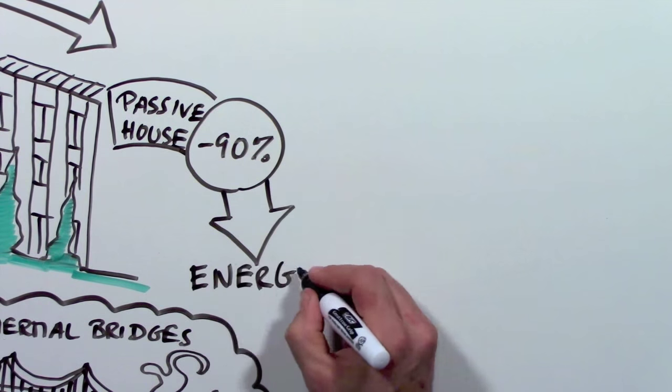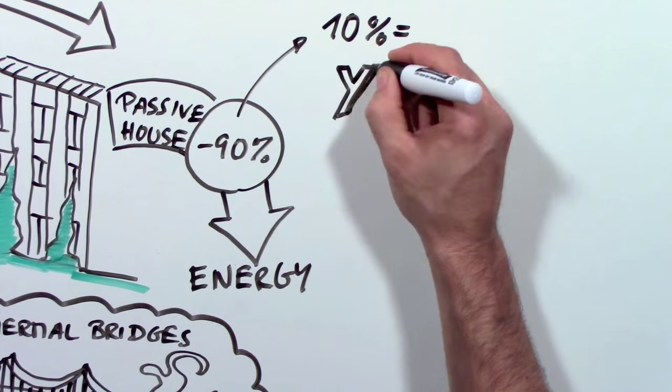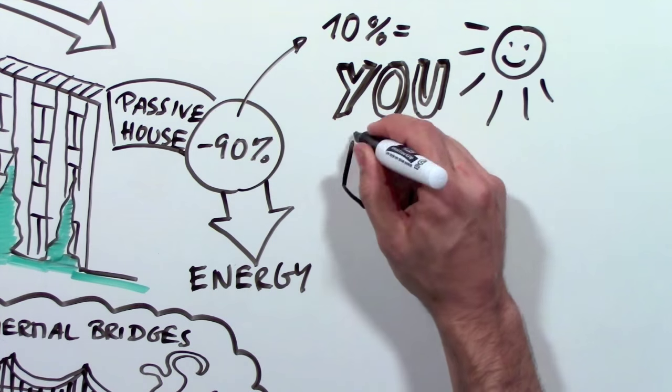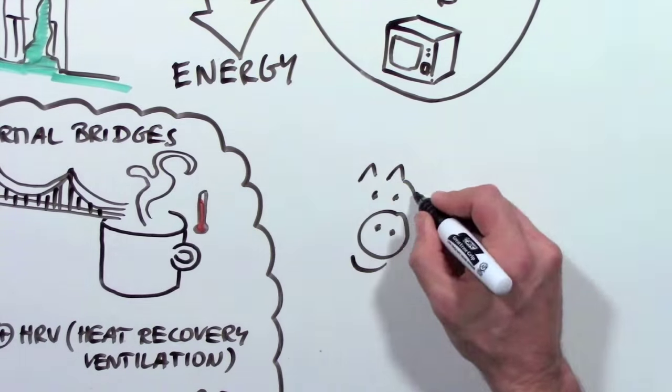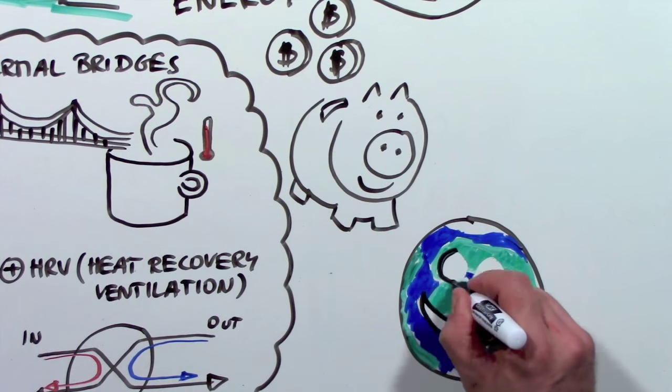A passive house needs 90% less energy and that can easily be supplied by your body heat, the sun, your appliances, light bulbs, and even your TV. This saves you a lot of money on your heating bill and helps preserve the environment.